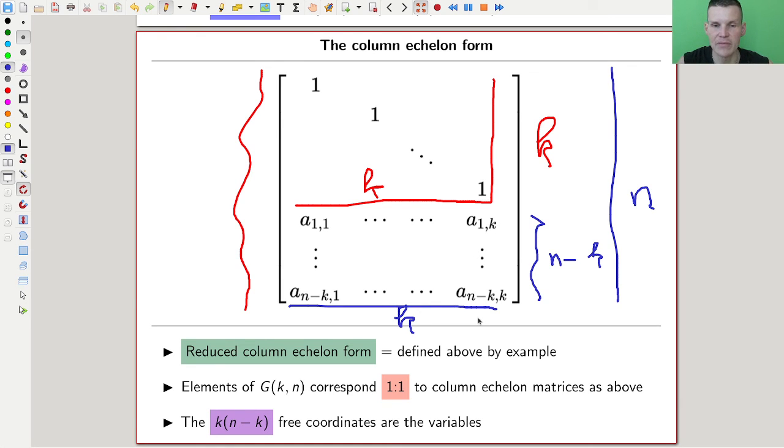Because we allow column operations on the matrix, we can always bring our matrix to this form where here is just a k by k identity block. Since the matrix is n by k, this number here is n minus k. You can see the dimension of the space, k times n minus k, because you have those free variables. Every element in the Grassmannian can be identified with such a matrix. These k times (n minus k) entries parameterize the elements of the Grassmannian.